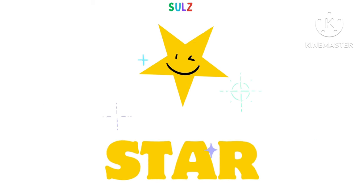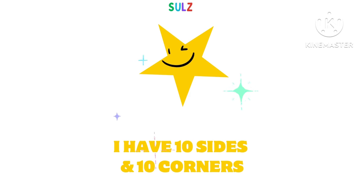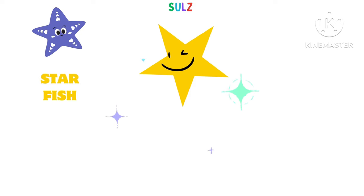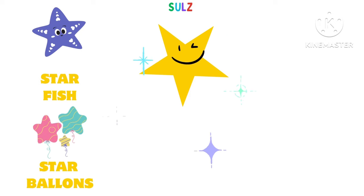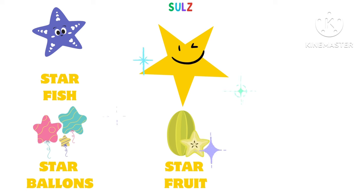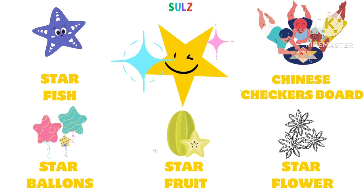Hi, I am star. I have ten sides and ten corners. You can see me in a starfish, star balloon, star fruit, star crop, and Chinese checkers board.